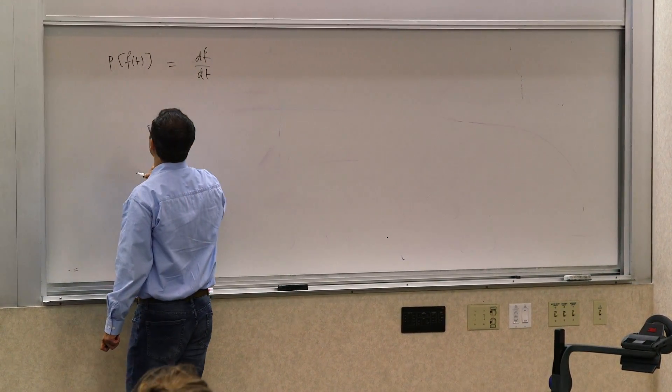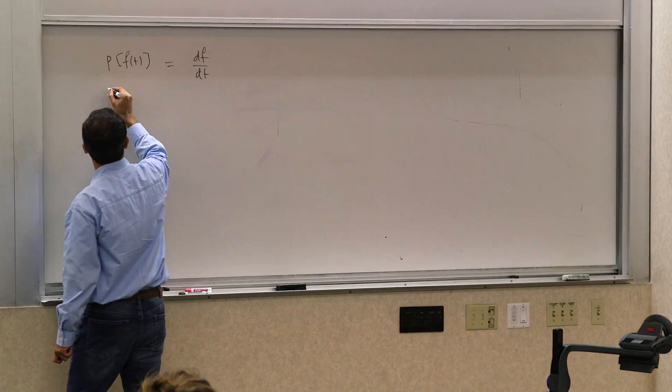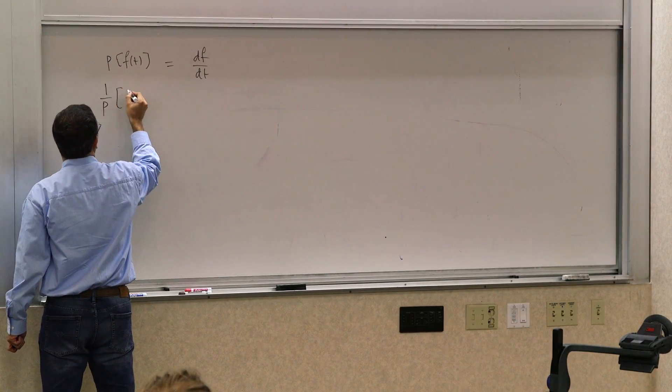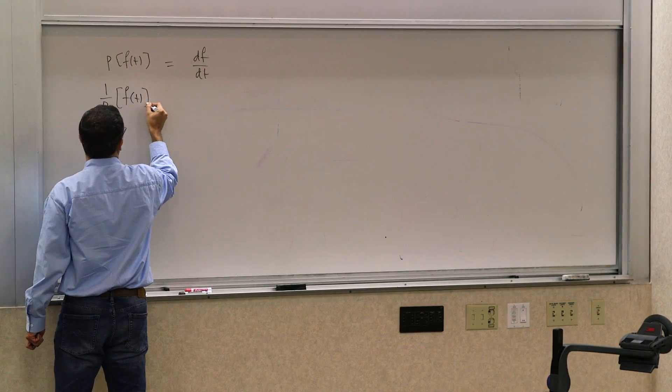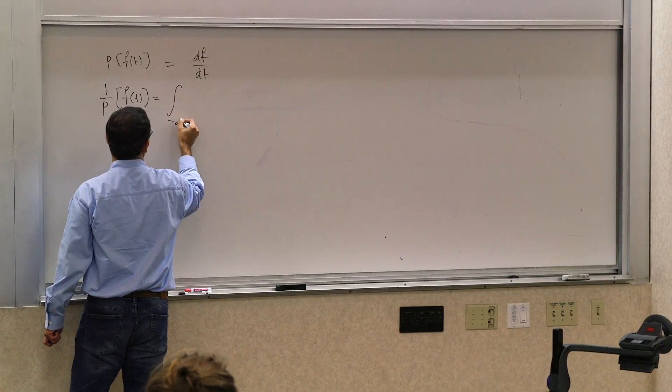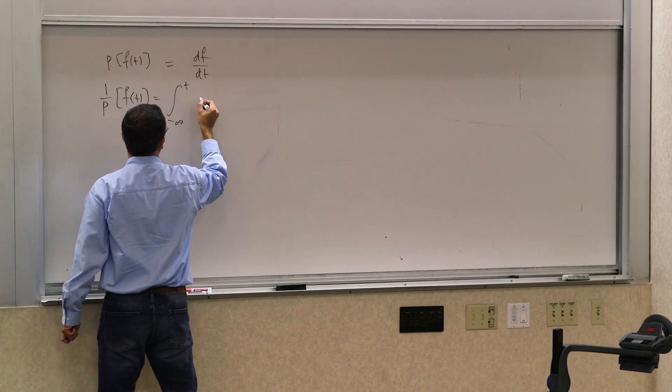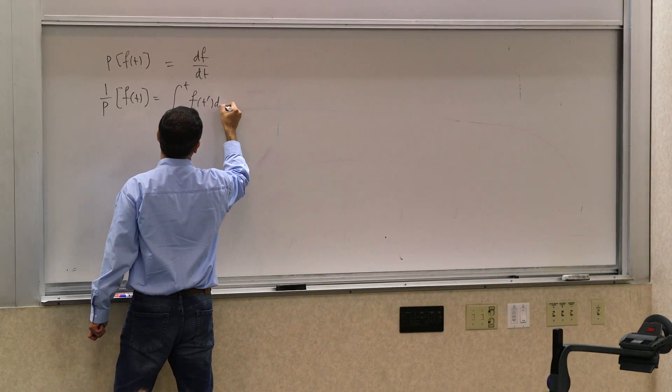So this is basically by definition that. And when you talk about 1 over p of f(t), you're defining as the integral, the definite integral from negative infinity to t of f(t) dt.